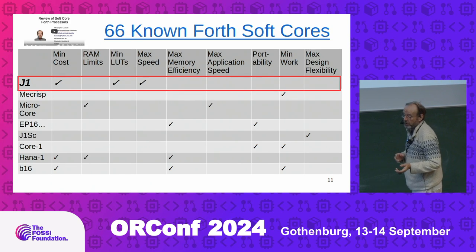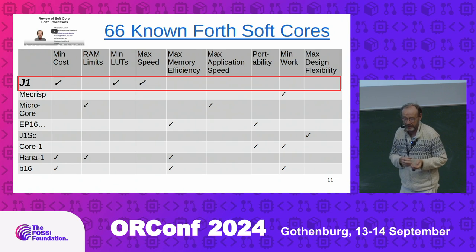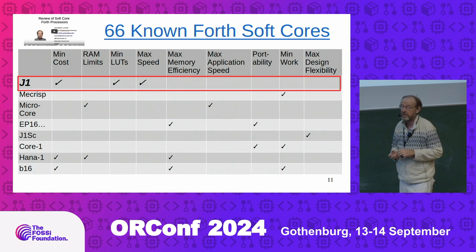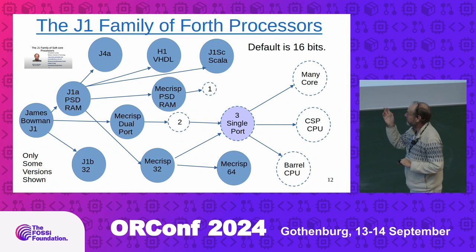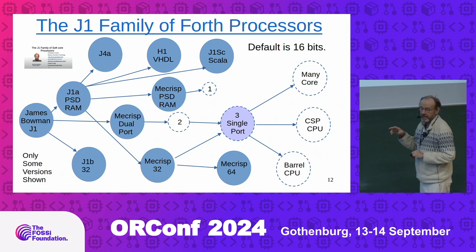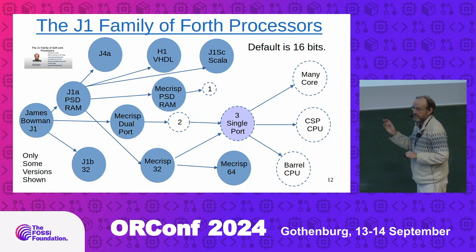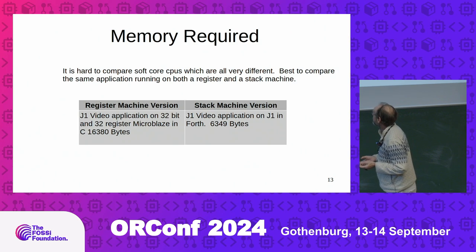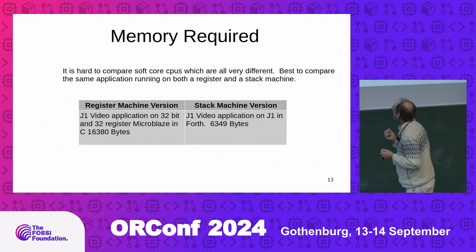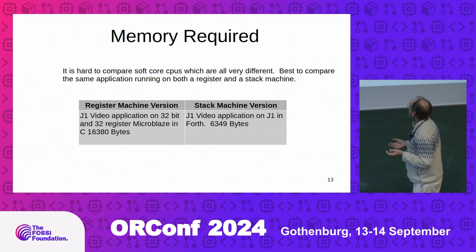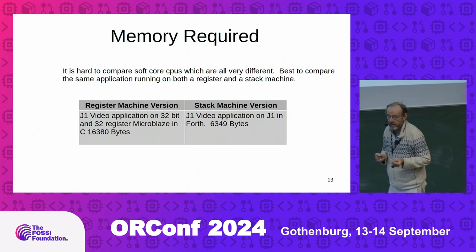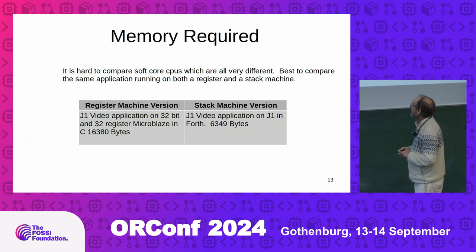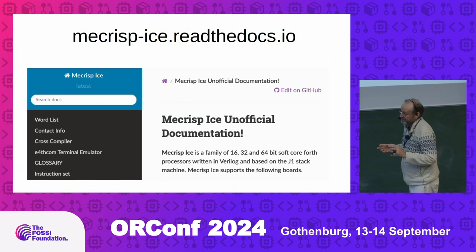There's a whole book on historic stack machines. I did a review of all the more recent soft core stack machines. The most common one is the J1. They all have different optimizations - there's a huge family: J1A in SpinalHDL, VHDL, and Verilog, 32-bit, 16-bit, 64-bit. The original J1, really brilliant work by James Bowman. He started off with a video application with 32-bit register machines and 32 registers - it took 16 kilobytes. Then he ported it to a 16-bit stack machine and shrank it down to 6 kilobytes. So it's like 60% smaller. This was not a refereed paper, but it's consistent with what I know of the technology.